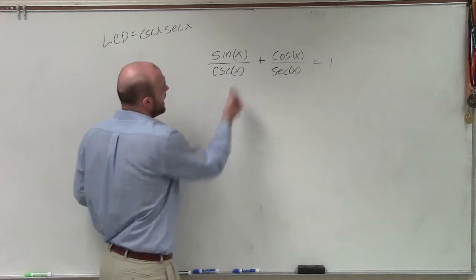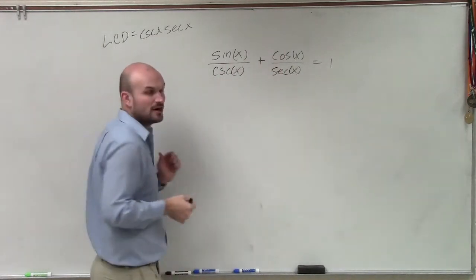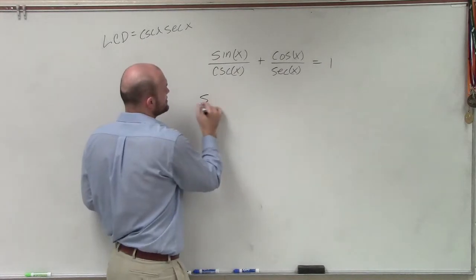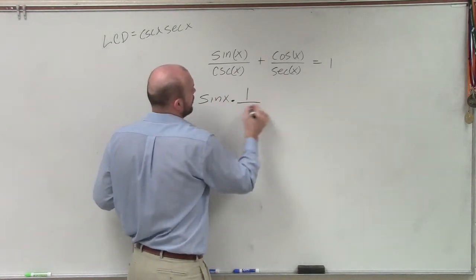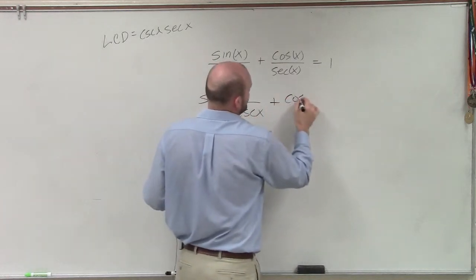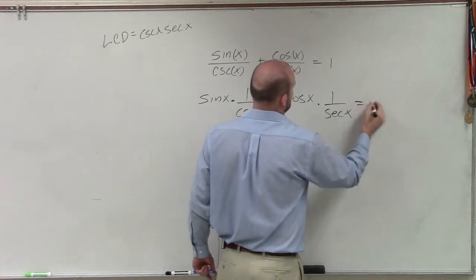Well, I automatically look at this and say, I know that sine and cosecant are reciprocals of each other, and cosine and secant are reciprocals of each other. So let me actually write this out as sin(x) times 1 over csc(x) plus cos(x) times 1 over sec(x) equals 1.